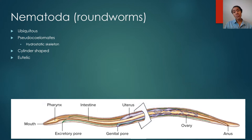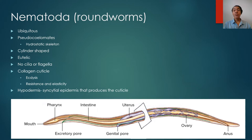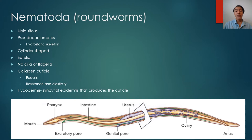Roundworms are cylindrical in shape — hence roundworms — and they're eutelic, meaning all adults of a particular species have a defined number of somatic cells. You don't see one adult having 100 somatic cells and another having 150. No matter how big or small they are, they all have the same number of somatic cells. Roundworms lack cilia or flagella, and this includes even their sperm — we'll talk about that later. They have a cuticle, as mentioned, because they're Ecdysozoan. Their cuticle is primarily composed of collagen, and they undergo ecdysis, shedding that cuticle whenever necessary to grow and develop.